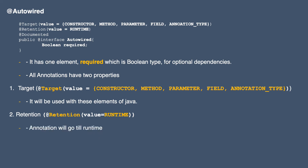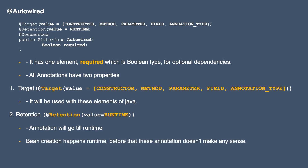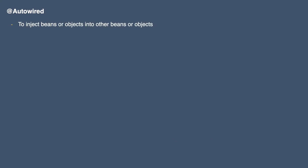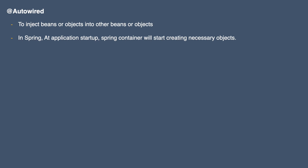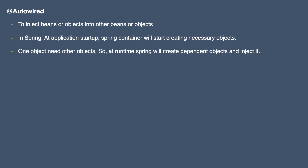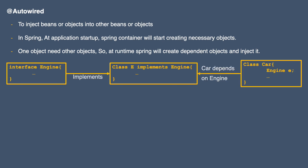The retention policy for autowire is runtime. That means this annotation will persist till runtime, which makes sense logically because we create beans and objects at runtime. The use of this annotation is to inject beans into other beans or objects. In Spring, when we start our application, the Spring container starts creating necessary objects. Sometimes one object needs another — it is dependent on another object — and in that case, at runtime Spring will create the dependent object and inject it. For example, we have an interface Engine and an implementing class E, and another class Car which needs an Engine.